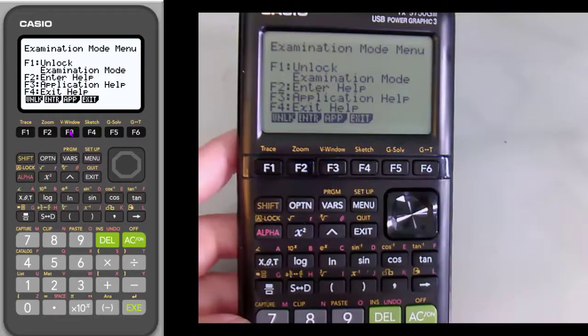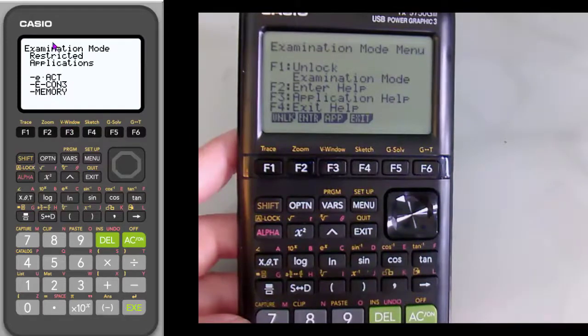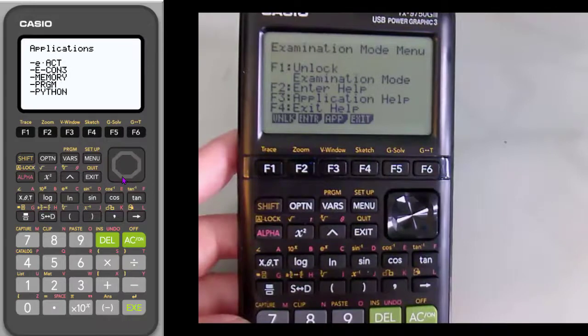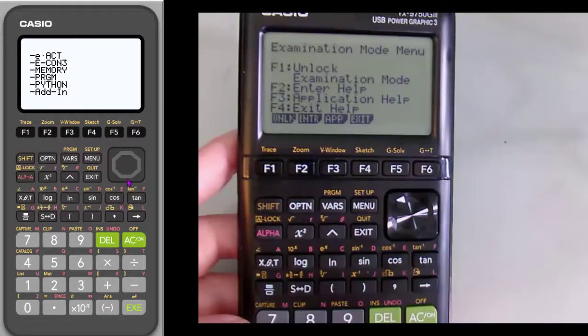F3, let's just show you what that is. This is telling you what happens when exam mode is in effect. And so it restricts certain applications. So it restricts the E activities, the econ, finance activities, the memory. So students can't recall anything that was in memory in case they put a program or something in there. They can't open the programs. They can't open Python, which is a programming app, and any other add-ins.